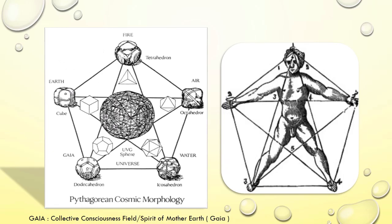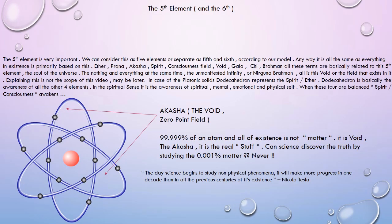The figure shows the Pythagorean cosmic morphology representing the five platonic solids and five elements. Gaia represents the fifth element — the spirit or collective consciousness of planet Earth, which is a living being. The fifth element is very important. We can consider it as five elements, or separate as fifth and sixth, according to our model. Everything in existence is primarily based on this vibration: ether, prana, akasha, spirit, consciousness field, void, Gaia, chi, Brahman — all these terms are related to this fifth element, the soul of the universe.